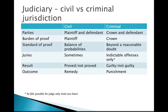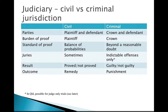The parties in a civil case are the plaintiff and the defendant; in a criminal case, the crown and the defendant. The burden of proof is who has to be able to make their case. The burden of proof in a civil case is the plaintiff — the person bringing the action. In a criminal case, it's the crown; the state must be able to show the proof necessary.